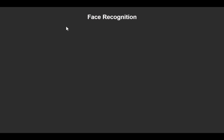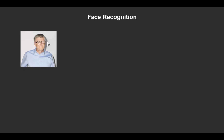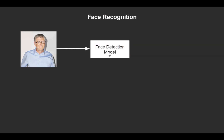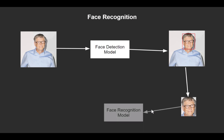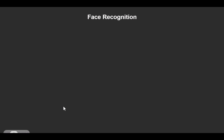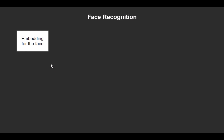The second part is face recognition itself. Suppose we have registered Bill Gates' face and now want to recognize him using a different image. We pass this new image to the face detection model, which returns the face location. We crop the face and pass it to the face recognition model, which generates an embedding. Now, instead of storing the name, we compare this embedding with the embeddings of all registered faces.